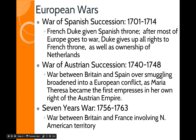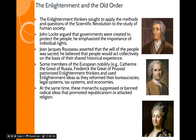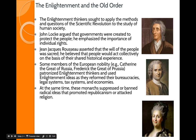Enlightenment thinkers sought to apply the methods of the scientific revolution to the study of human society — classifying and systematizing knowledge and searching for natural laws underlying human affairs. John Locke argued that governments were created to protect the people, emphasizing the importance of individual rights that the government cannot take away. Jean-Jacques Rousseau — JJ Rousseau — asserted that the will of the people was sacred and that people would act collectively on the basis of a shared historical experience.